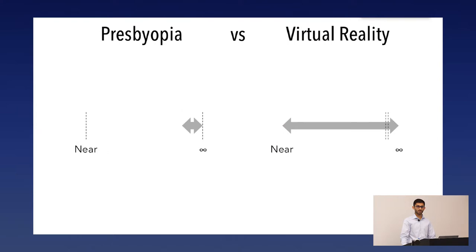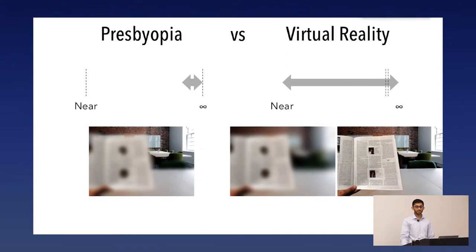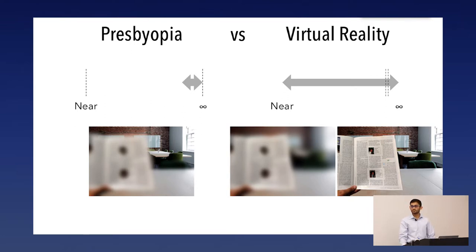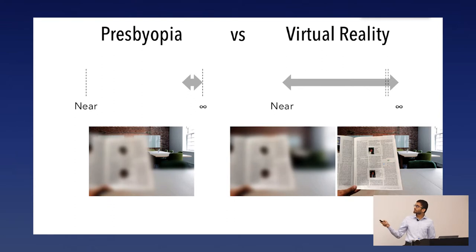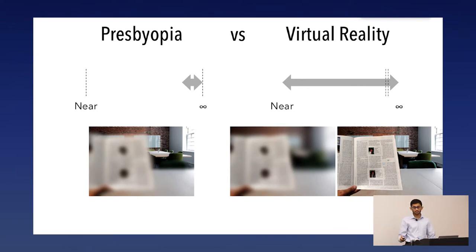Now let's move on to how this all relates to virtual reality. With presbyopia, you can see far away clearly but not close up, because the real world exists at close distances but you can only focus far. In virtual reality, it's the opposite: the virtual world only exists at a far distance in most consumer VR headsets today, whereas a typical VR consumer can refocus through a wide range. You might ask why not just always focus far — but there's a problem, which requires explaining VR optics and focus cues.